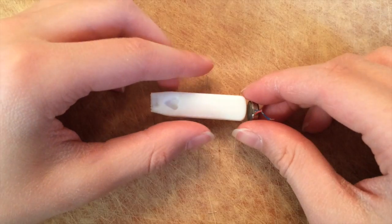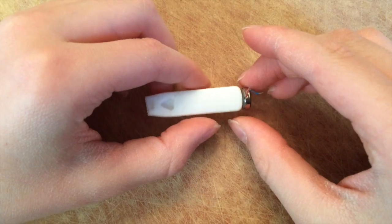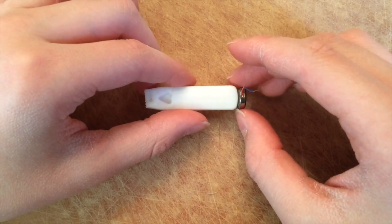Next, attach the vibration motor to the front of the toothbrush head. This is important so the vibrations don't go left and right, but instead up and down.